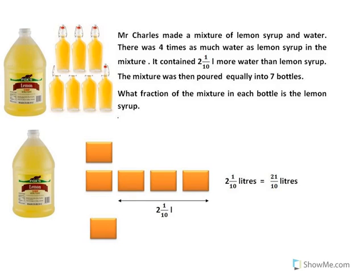Mr. Charles made a mixture of lemon syrup and water. There was four times as much water as lemon syrup in the mixture. It contained 2 1/10 liters more water than lemon syrup. The mixture was then poured equally into 7 bottles. What fraction of the mixture in each bottle is the lemon syrup?